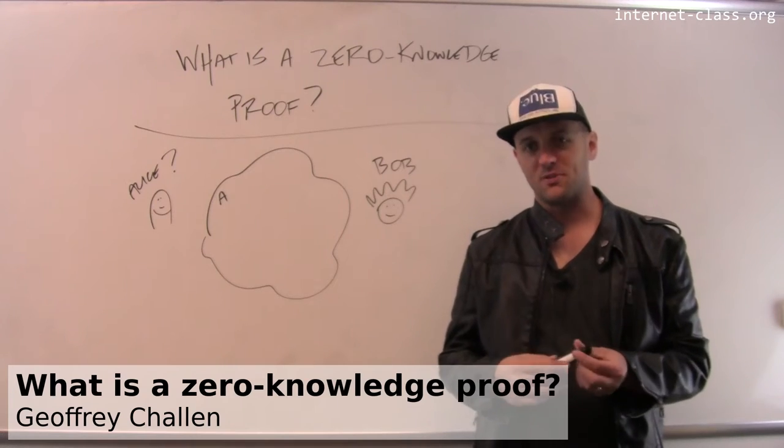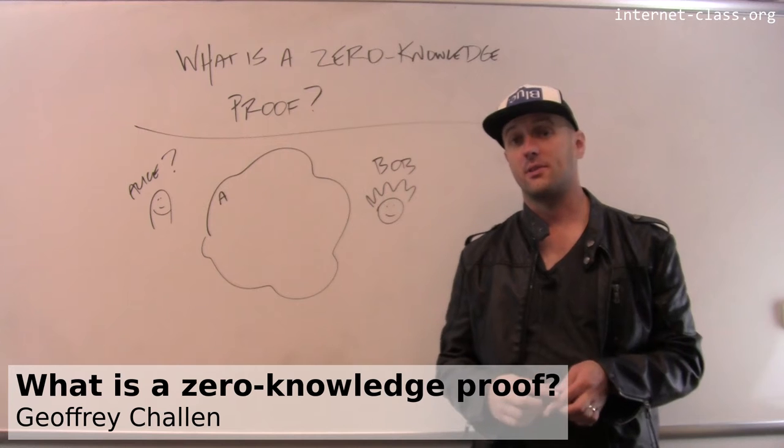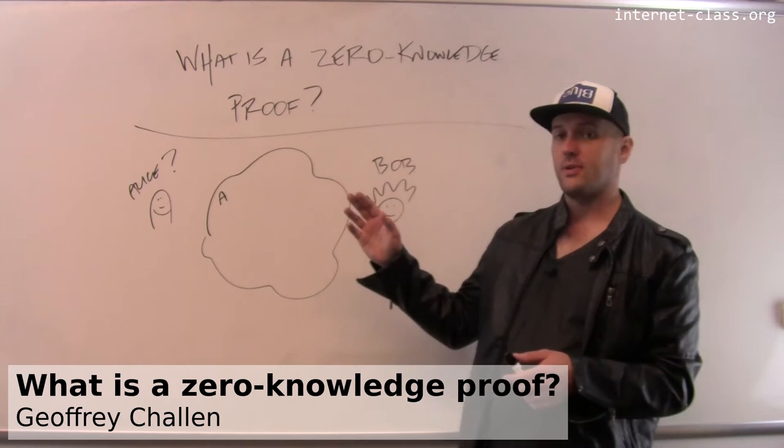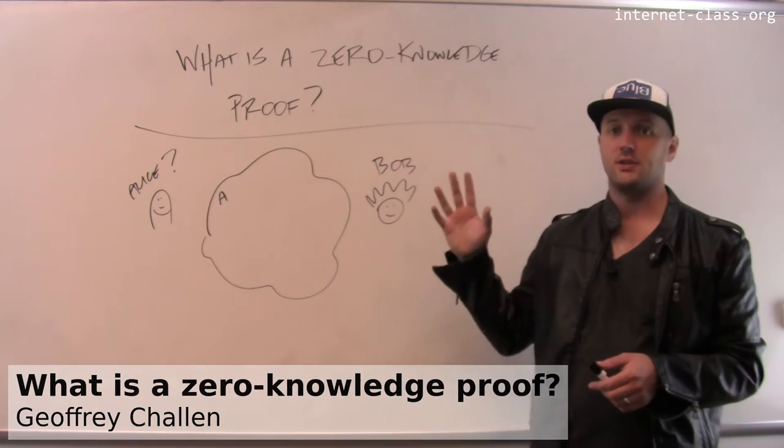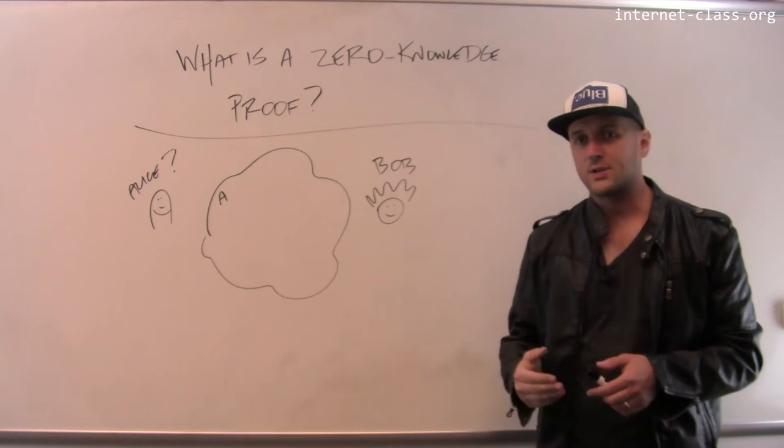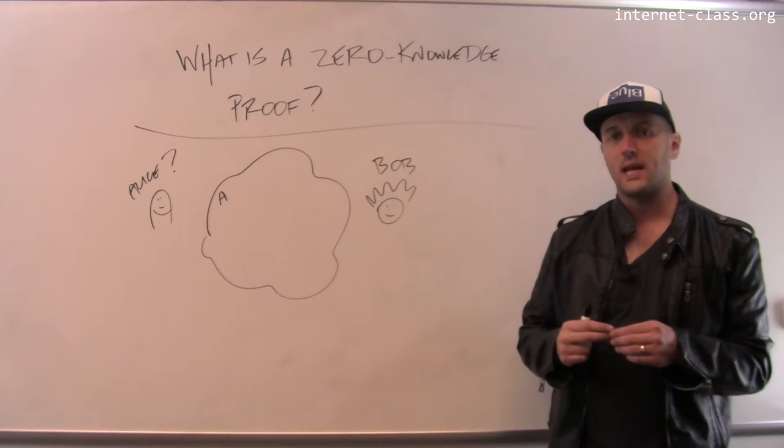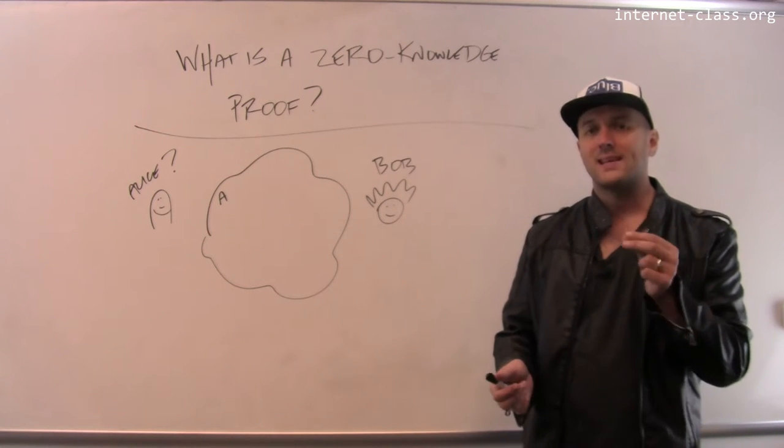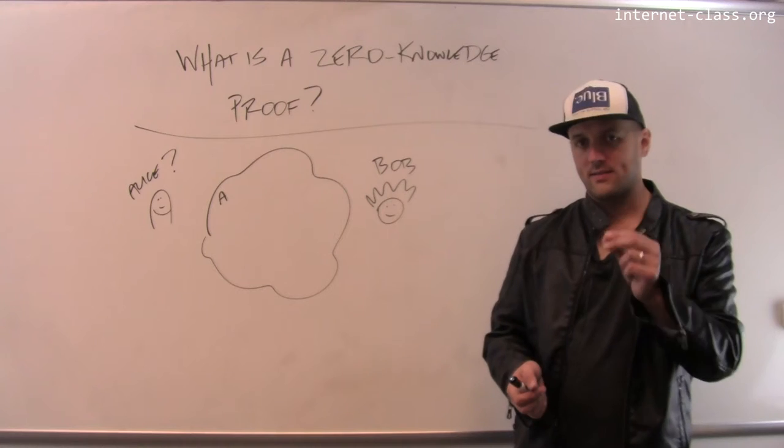Another one of the many really beautiful and mysterious ideas that goes along with online encryption and cryptography is this idea of what's known as a zero knowledge proof. A zero knowledge proof is a way for me to prove to you that I know something without revealing any information about that thing itself.